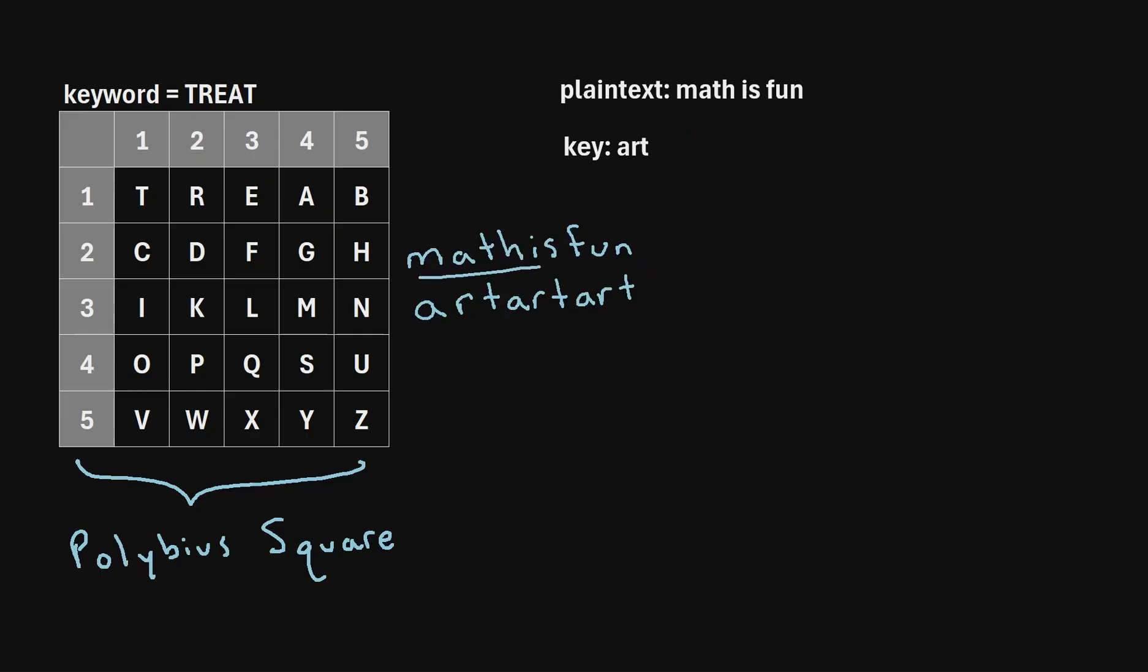Next we're going to convert both the plain text and this key stream into numbers. So we'll work with the plain text first. So first we go letter by letter. So first we need to find M within our Polybius square. So here's our M. What we're going to do is write M as the row number, which is 3, and the column number, which is 4. So we're going to write M as 3, 4, or 34,